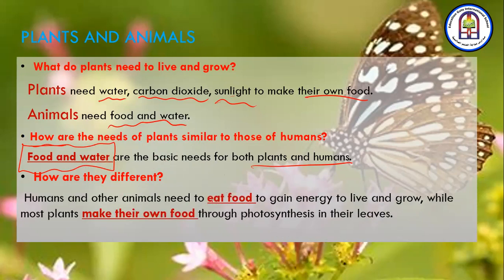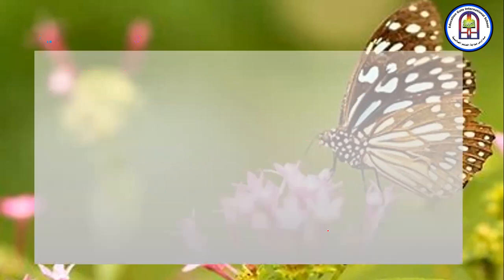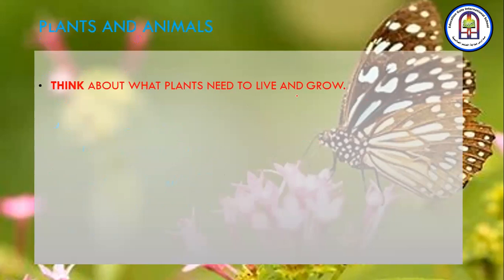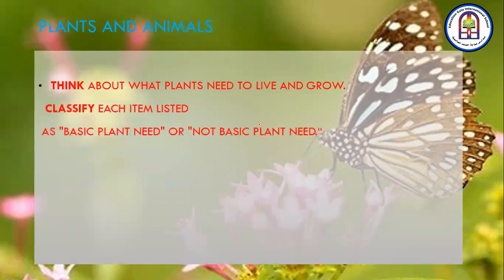But how are they different? Humans and other animals need to eat food to gain energy, to live and grow, while most plants make their own food through the process of photosynthesis. Think about what plants need to live and grow, and classify each item as a basic plant need or not a basic plant need.